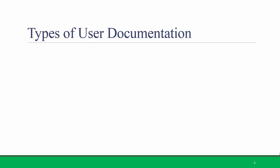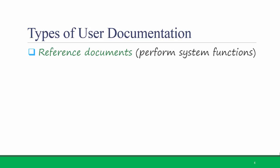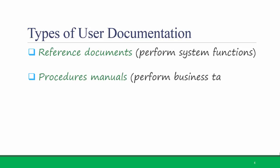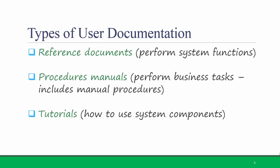There are three main types of documents you can include in user documentation. One is reference documents, which explain how to perform system functions. A second is procedure manuals, which describe how to perform business tasks, including manual procedures. A third is tutorials, or how to use system components. The example I've been using throughout this module is a learning management system, such as Titanium.